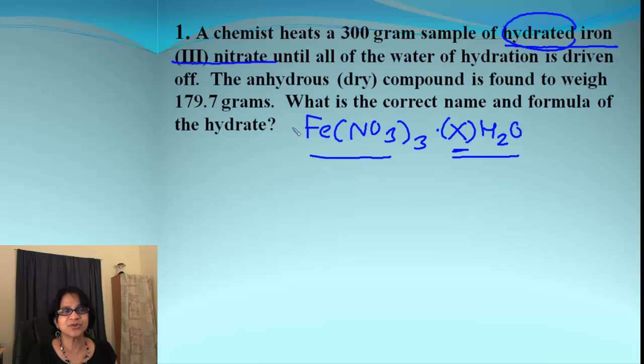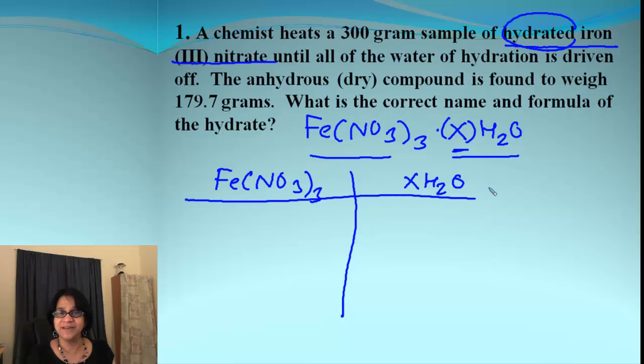So we are going to treat this just simply the way we did with the empirical formula. We are going to have the ratio for this anhydrous to the water molecules. So let's begin. It's anhydrous iron nitrate without water molecules and over here we have the water molecules.